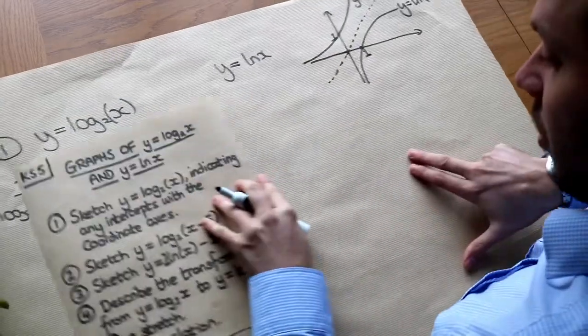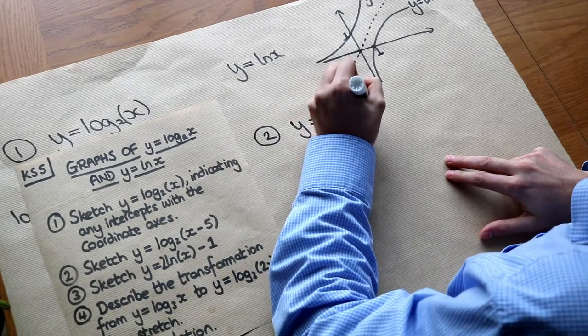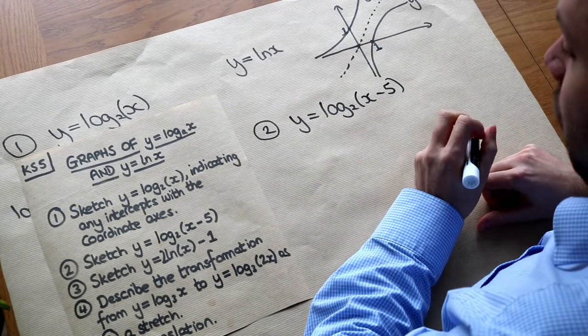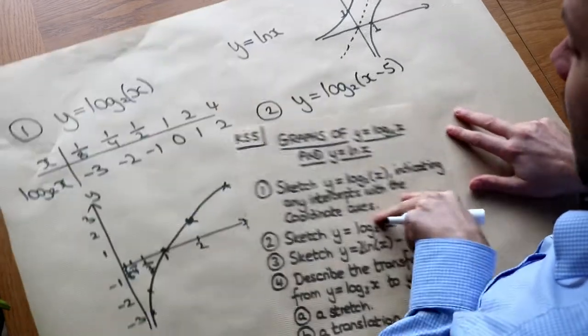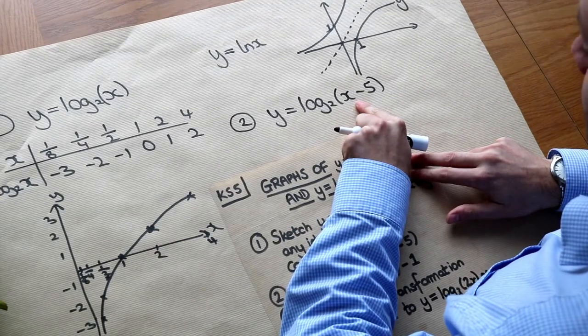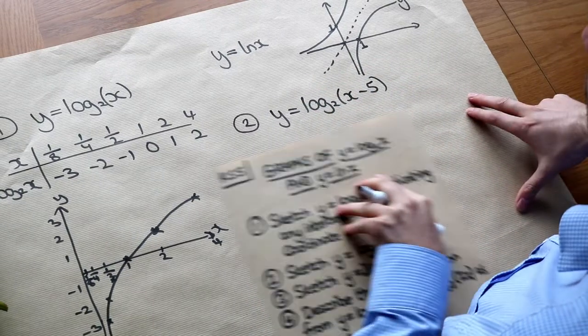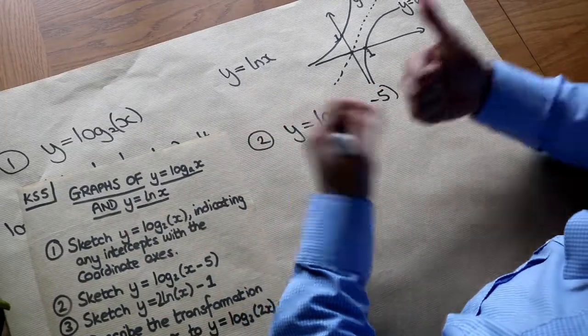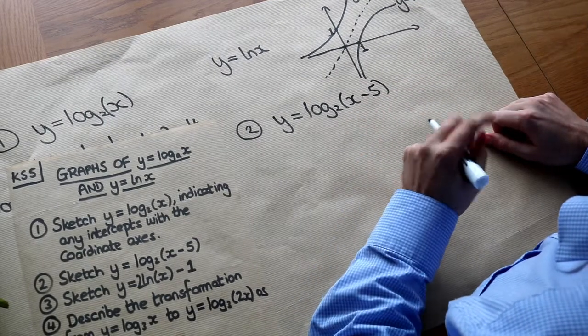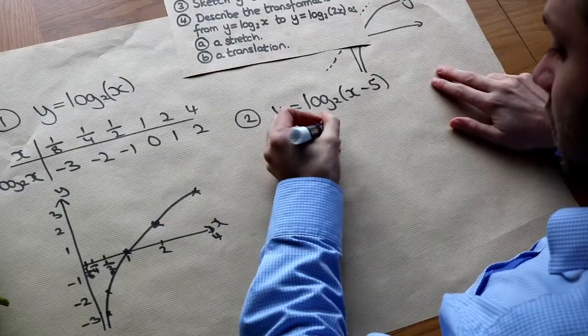What about these other questions here? So 2, sketch y equals log base 2 of x minus 5, and we want to identify any intercepts with the axis. Now can we see that this is actually a graph transformation, because we know how to sketch log base 2 of x, as it looks like here. But can you see that the x value has been replaced with x minus 5? So the change is inside the function. Now when we saw graph transformations we saw that if the change is inside the function it affects the x value, and it does the opposite. So the opposite of minusing 5 from the x values is to add 5 to the x value. So it's going to shift this graph here right 5.